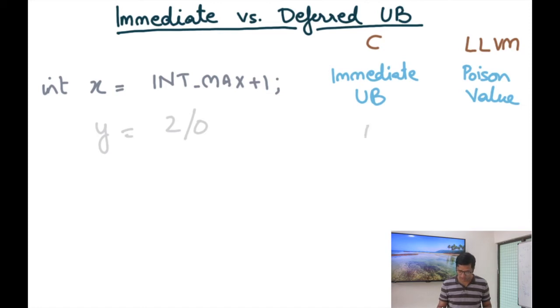So even for LLVM this would result in immediate UB. So we have selectively chosen some operations where we are going to trigger immediate UB and some operations where we are going to generate a poison value.